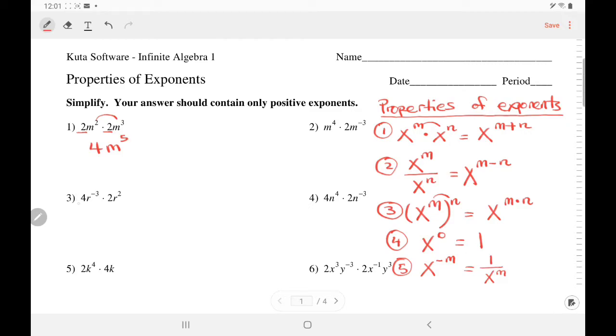Number 3: Again, multiply the coefficients to get 8. Now add the exponents. Negative 3 plus 2 is negative 1. Now apply property 5, where a negative exponent means r is going to the denominator to the first power. We don't have to write it, but 8 is unaffected and stays on top.